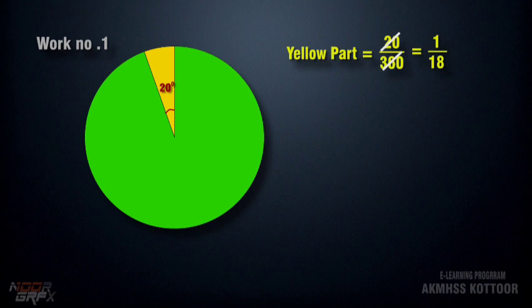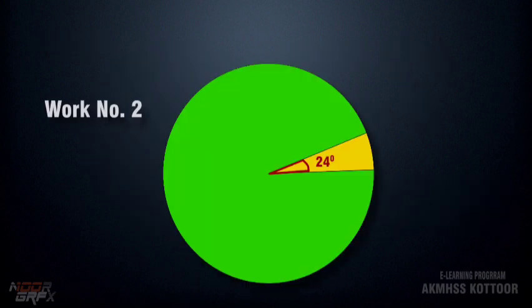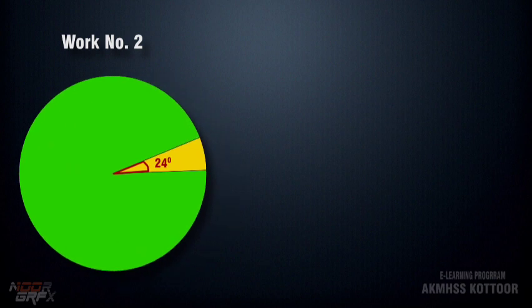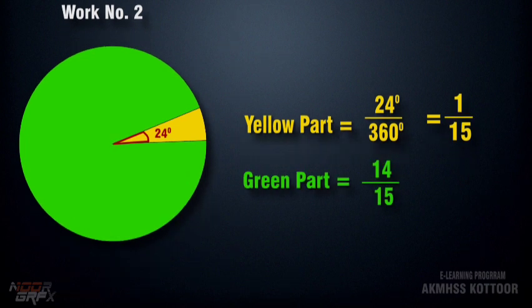In this figure, if the circle is divided into 18 parts, one part is yellow and the remaining 17 parts are green. In the second figure, the yellow part is 24 degrees out of 360 degrees. The fraction of the yellow part is 1 out of 15 and the green part is 14 out of 15.